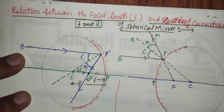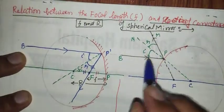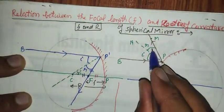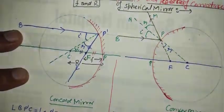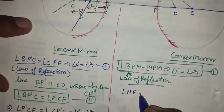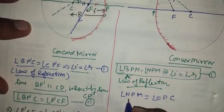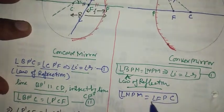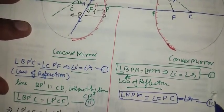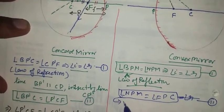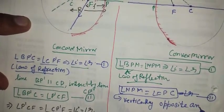Now see two lines: line N C and line M F intersect. In that condition, vertically opposite angles are equal. So if this angle is r, this angle will also be r. Therefore angle N P M is equal to angle F P C, and this is equal to angle r. This is equation number two, because it is a vertically opposite angle.